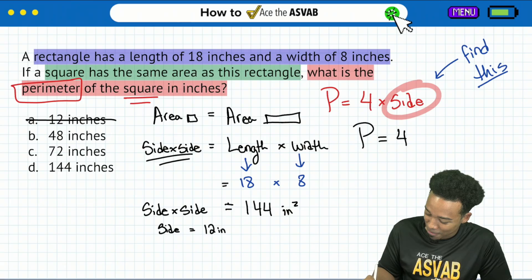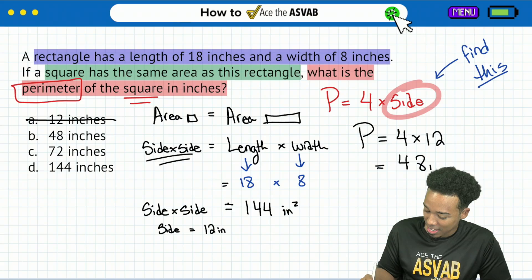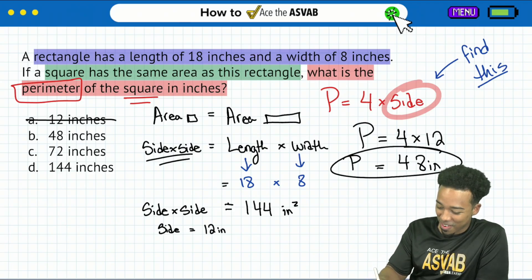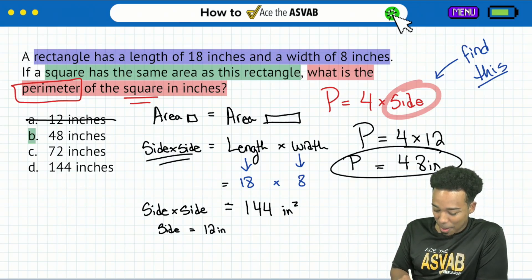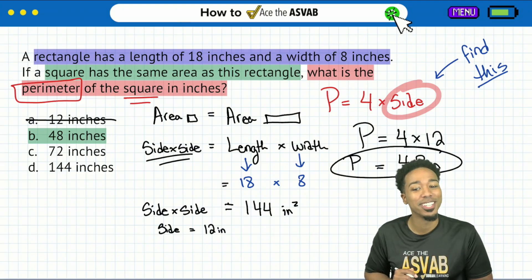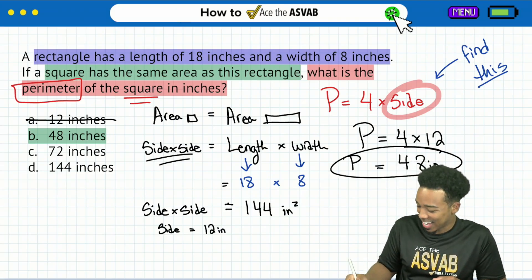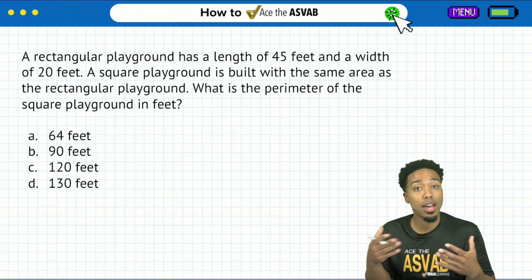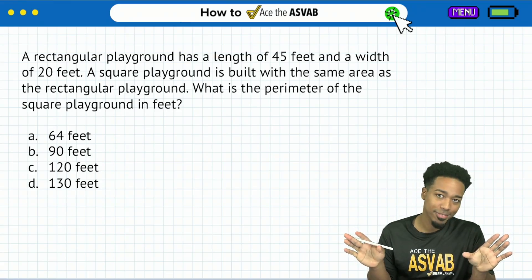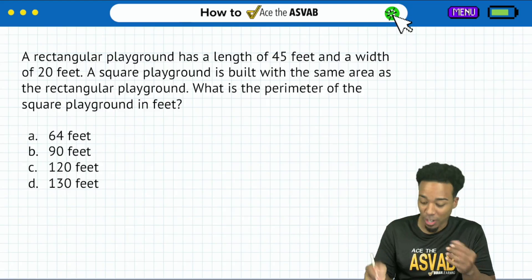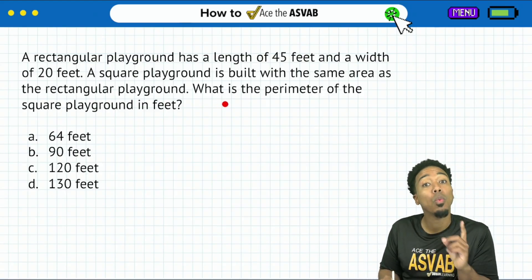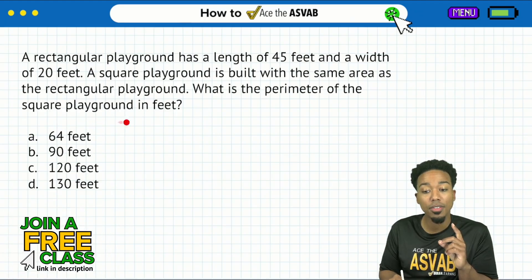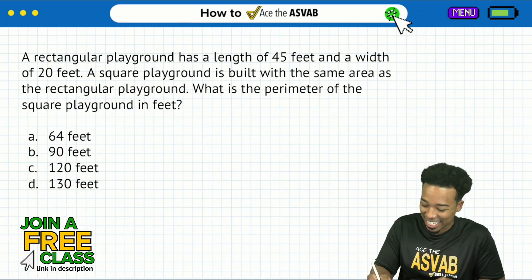18 times 8, my party people, what will that be? Mental math tells me 18 times 8: 10 times 8 is 80, 8 times 8 is 64, 80 plus 64 is 144. So we have 144 square inches as the area. And we know that it's the same area as the square. And to get that, that's side times side. So now that we're here, let's go ahead and zoom on in. What times itself gives you 144? 12. Booyah.